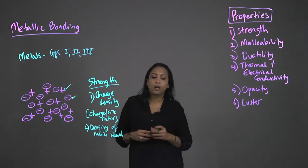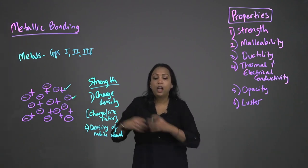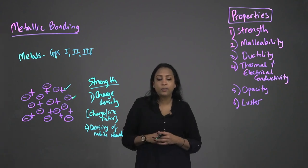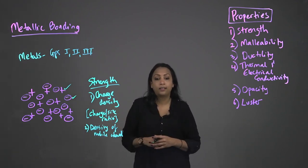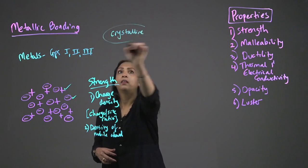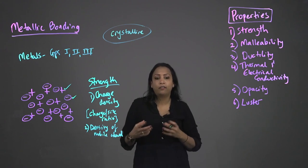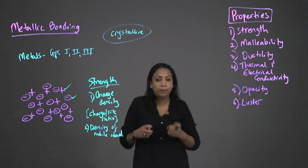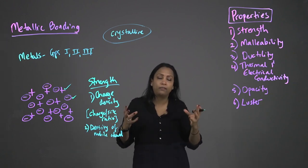Metals are giant structures of atoms held together by metallic bonds. The outer valence electrons are loosely held and separate from the nuclei, moving at random through the crystal lattice. The solid structure of metals may be called crystalline because it consists of a regular lattice of particles. Most metals are close-packed, meaning they fit as many atoms as possible in whatever volume is available.